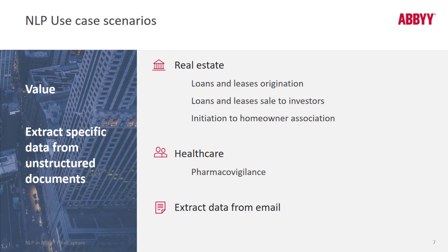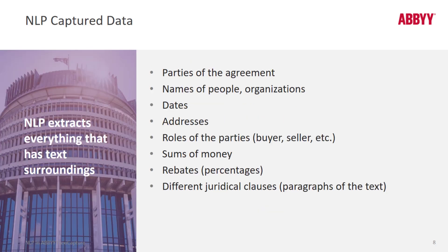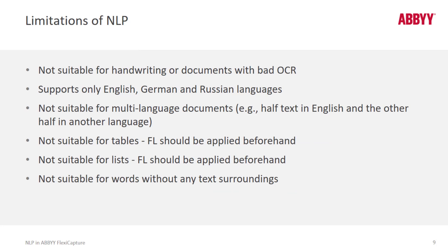Another use case is extraction of data from emails, which can facilitate quickly sorting incoming emails. Using NLP algorithms, we can capture data such as parties of an agreement, names of people or organizations, dates, addresses, roles such as buyer or seller, sums of money, percentages, and different judicial clauses — that is, paragraphs of text. Let's now discuss some of the limitations of NLP.